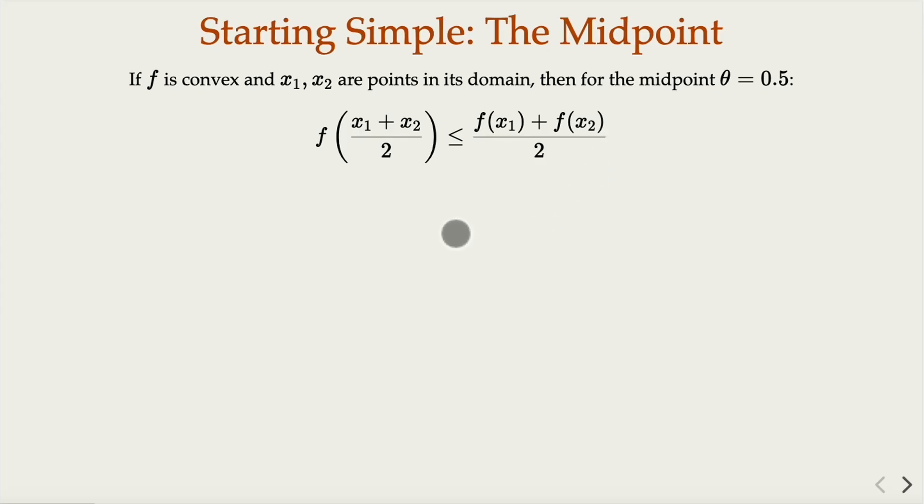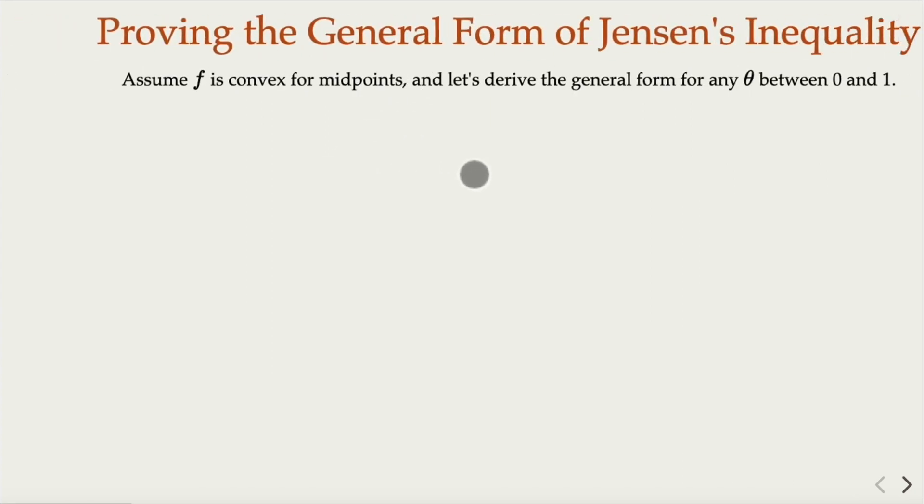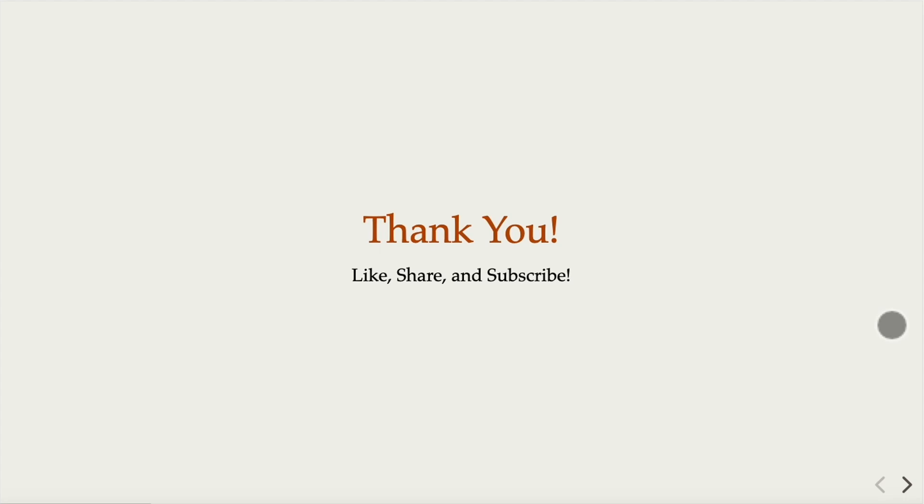So we can prove that this definition is equivalent to the general form where you have a different value for theta. Earlier we used t, but sometimes you can say theta and 1 minus theta of the inequality. And of course, there's a general form of the probability and how do you prove from the midpoint convex to the general form of theta. And of course, there are many other interesting problems and proofs related to Jensen's inequality. We're going to have a series of videos. So please subscribe to the channel for the upcoming videos. Thank you.